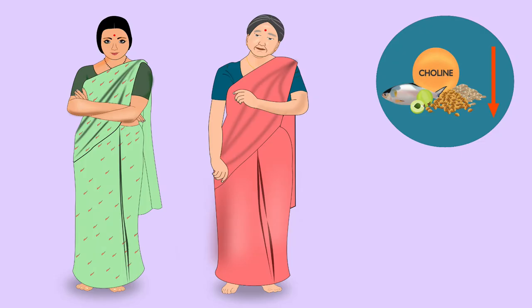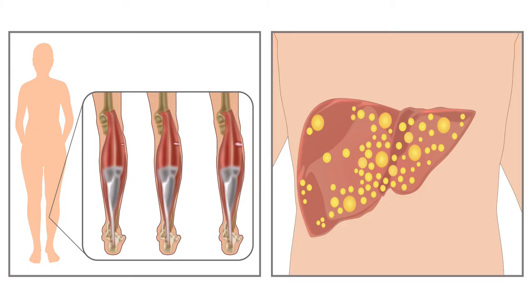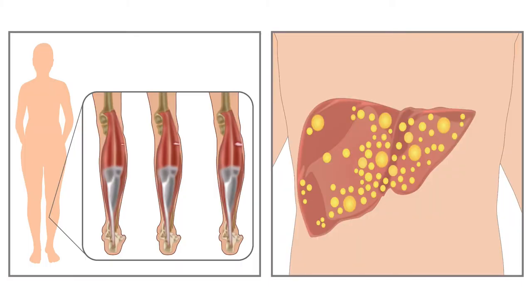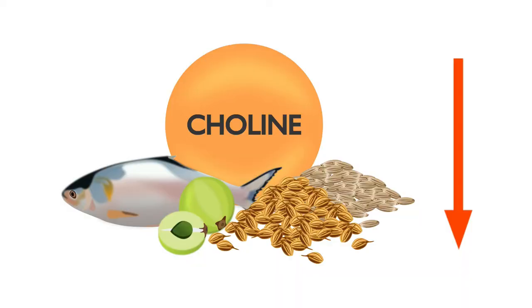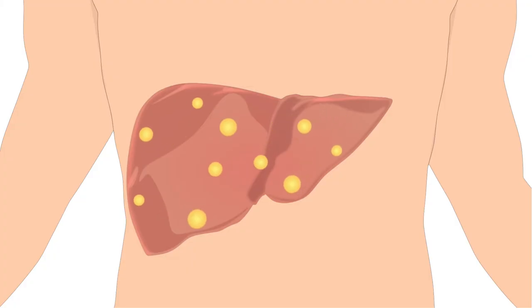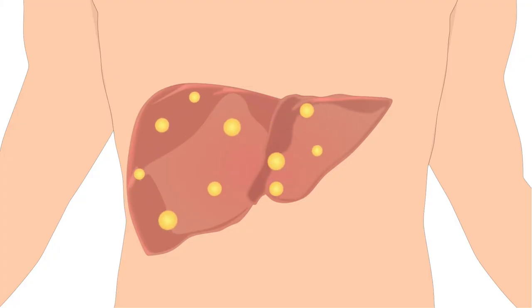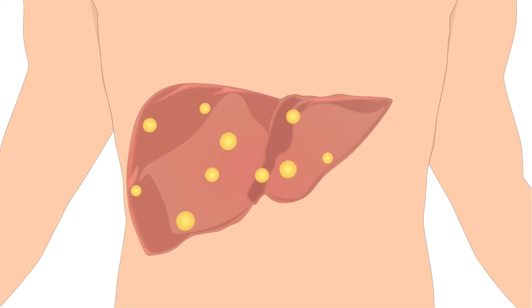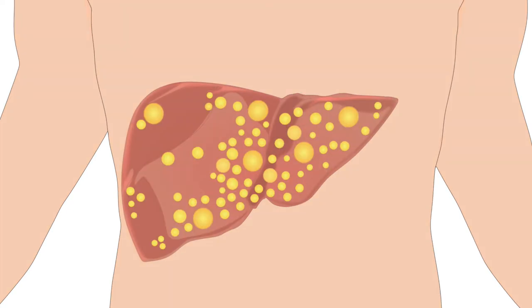In adults, choline deficiency can cause damage to the muscle and liver. Due to choline deficiency, fat does not move out of the liver. This leads to fat accumulation, causing non-alcoholic fatty liver disease.